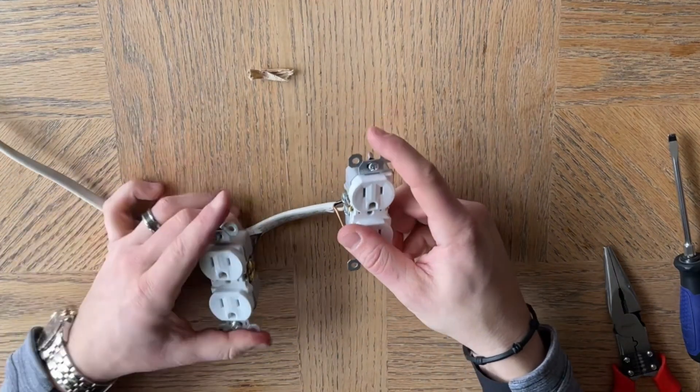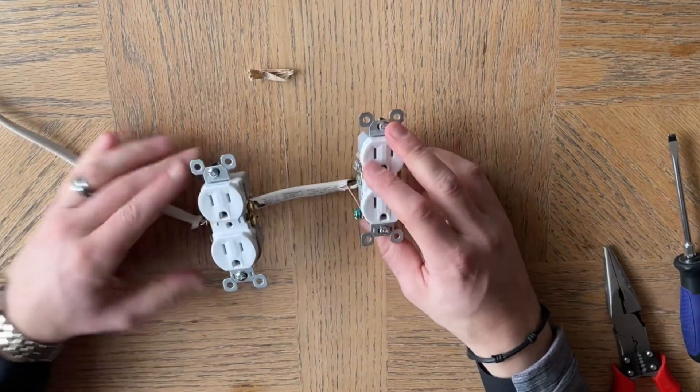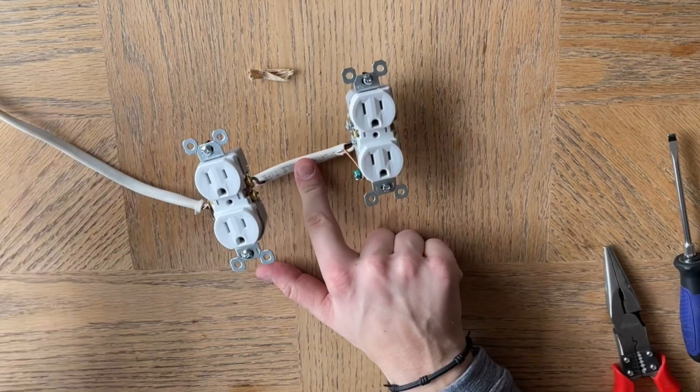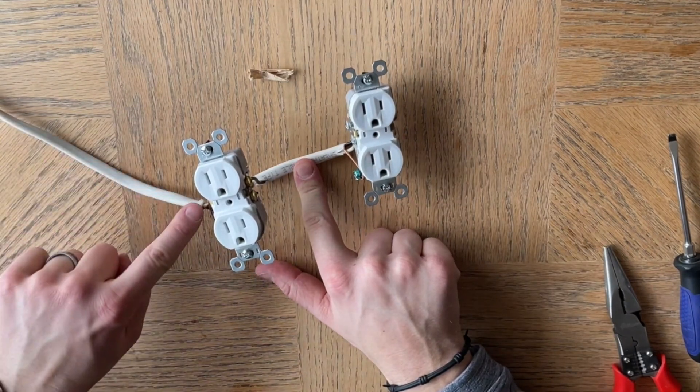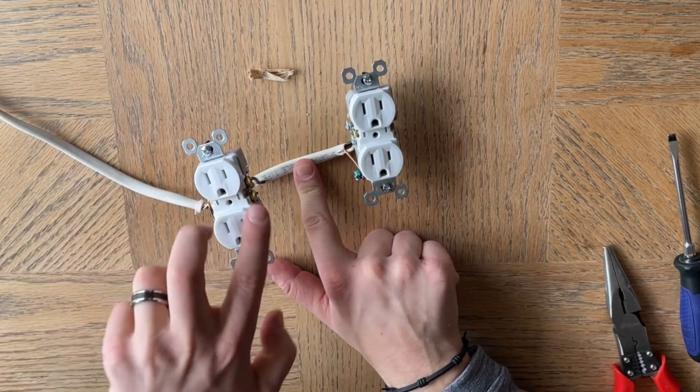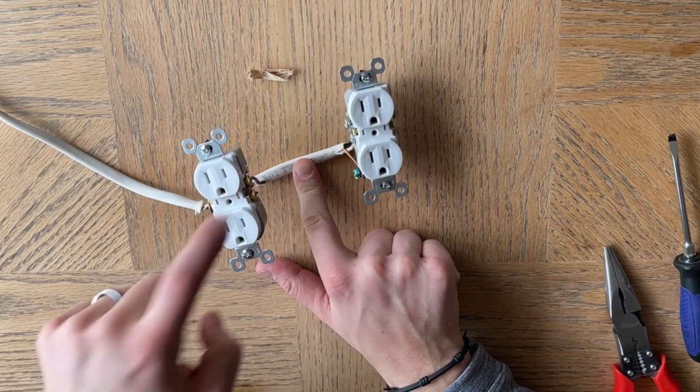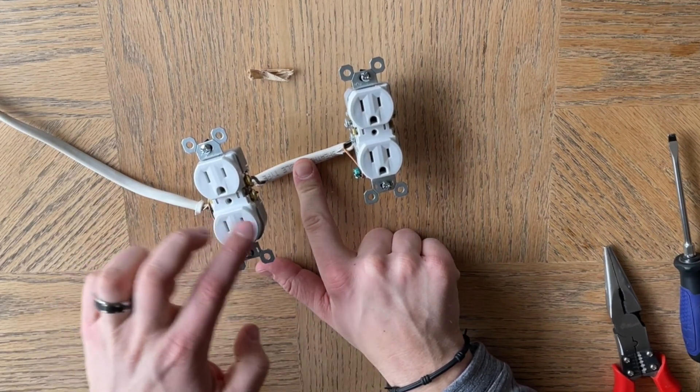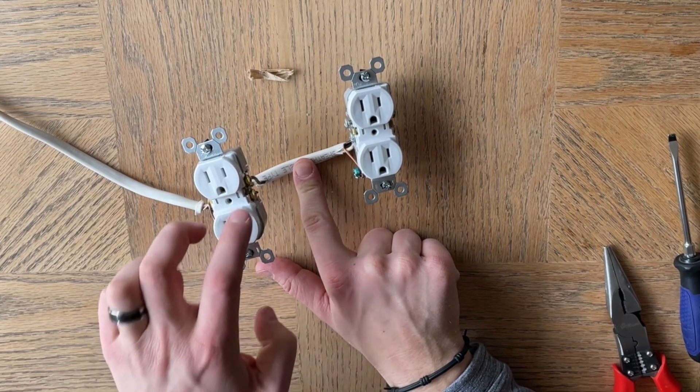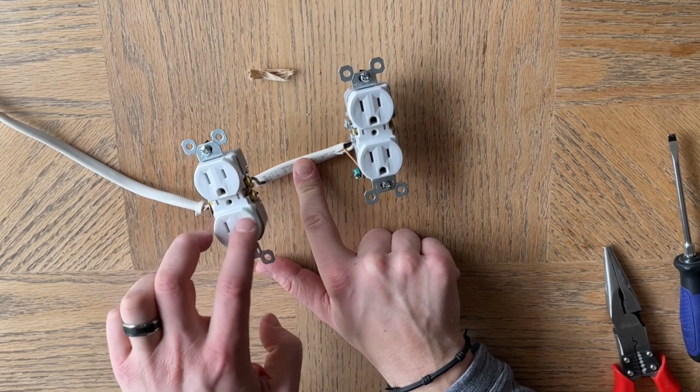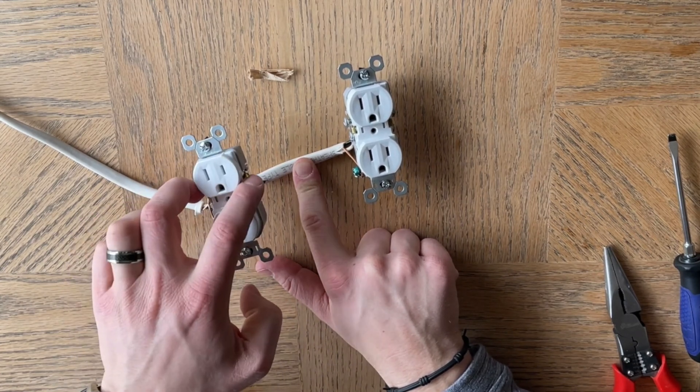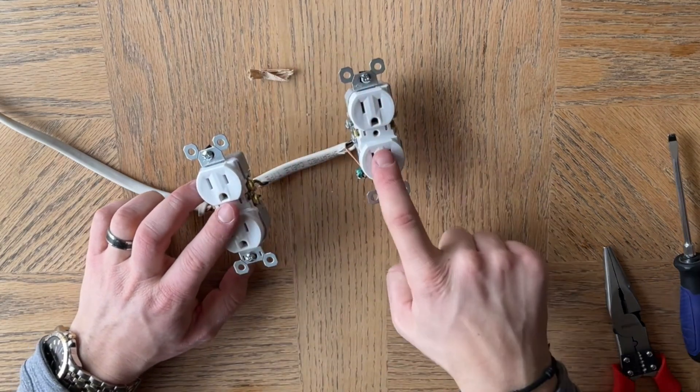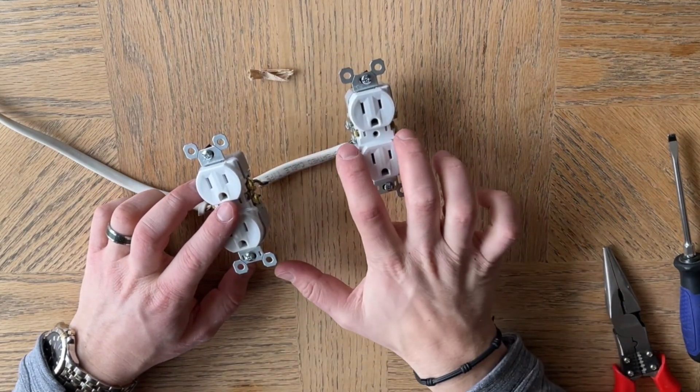So now what's happening is you have hot wire coming in here. It's running to the bottom of this outlet. Hot wire, neutral wire. Then the power is going from those two bottom terminals up to these terminals and over to this outlet. Then it's coming in to the bottom here.